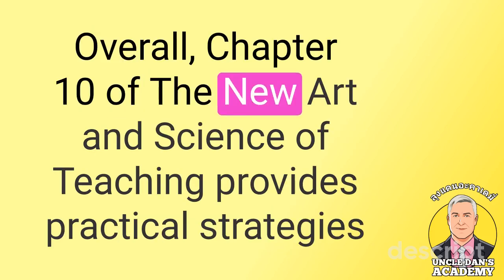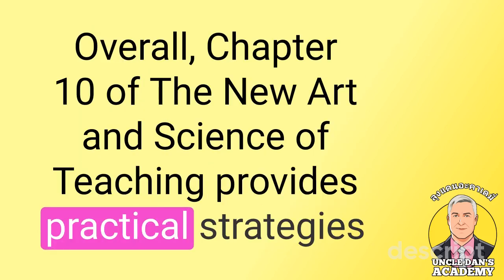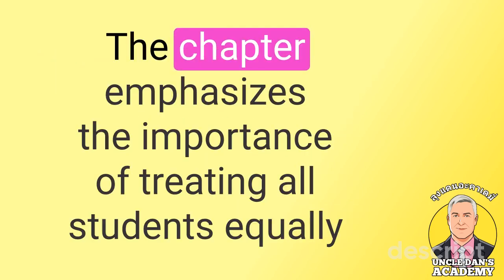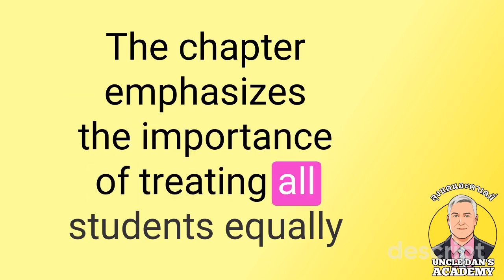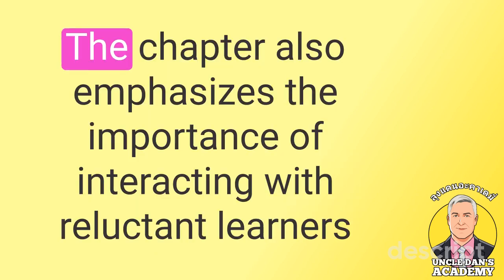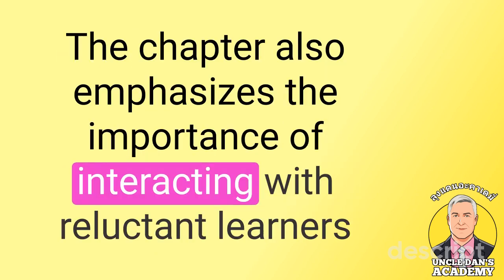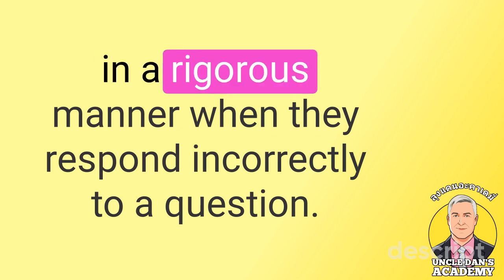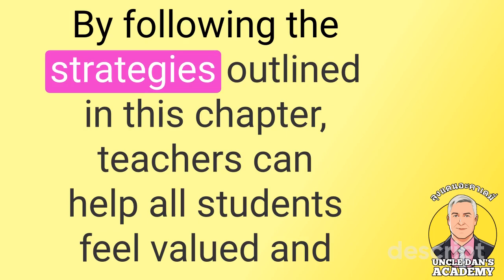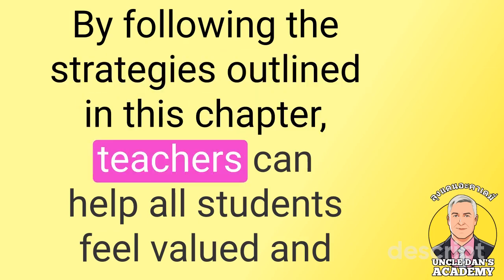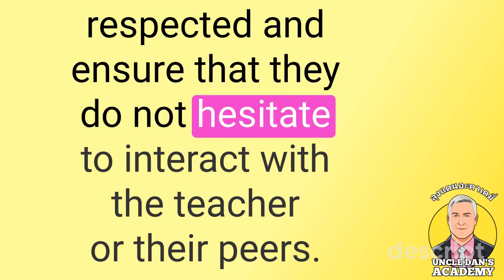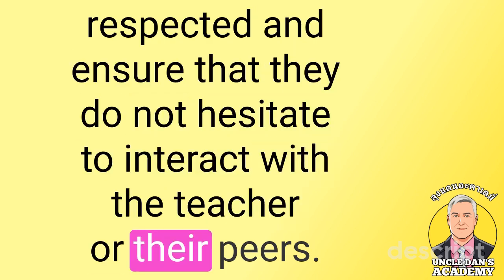Overall, chapter 10 of The New Art and Science of Teaching provides practical strategies for communicating high expectations for reluctant learners. The chapter emphasizes the importance of treating all students equally and providing scaffolding and encouragement to reluctant learners, as well as interacting with them in a rigorous manner when they respond incorrectly to a question. By following the strategies outlined in this chapter, teachers can help all students feel valued and respected and ensure that they do not hesitate to interact with the teacher or their peers.